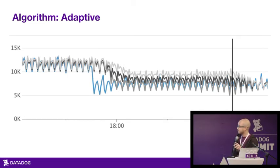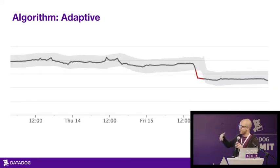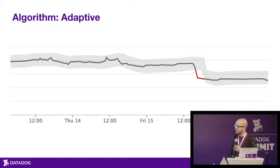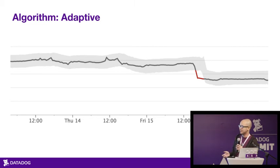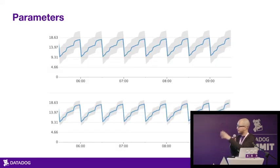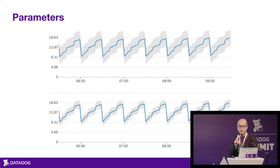The last algorithm is called Adaptive. It's a blend of several different projections combined using an agnostic online learning algorithm. It's useful for series whose behavior changes over time. Another advantage of Adaptive is that, unlike Agile or Robust, it requires less history because it can adapt and work with what it has. All algorithms have a single parameter — the tolerance — which controls how fat the band is. Set it according to how much deviation you're comfortable with.